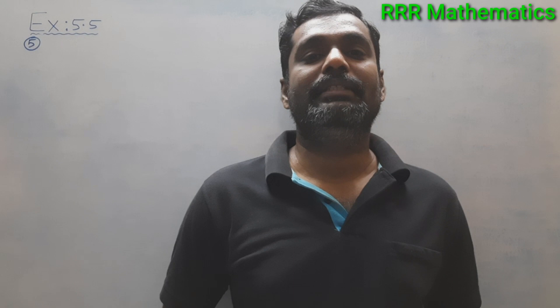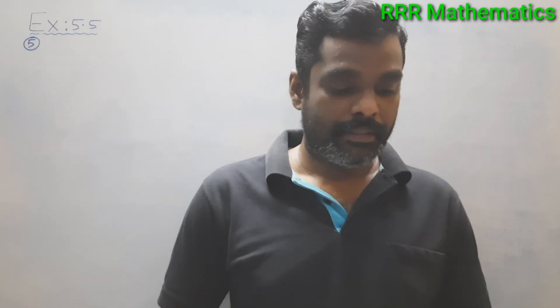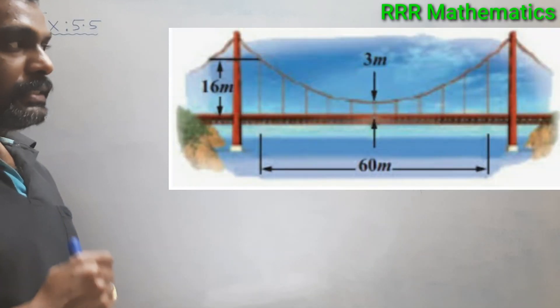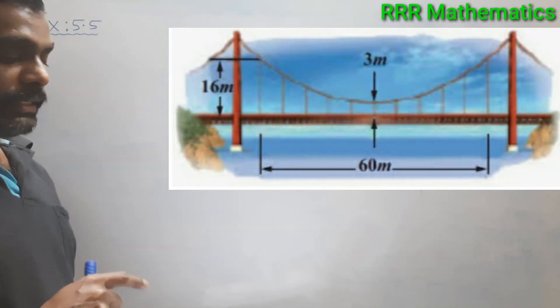Today we will discuss Chapter 5: Two-Dimensional Analytical Geometry, Exercise 5.5, Question 5. The question: a parabolic cable of a 60-meter portion of a road bed of a suspension bridge is positioned as shown. Vertical cables are to be spaced every 6 meters along this portion of the road bed. Calculate the length of the first two of these vertical cables from the vertex.